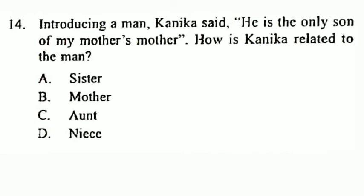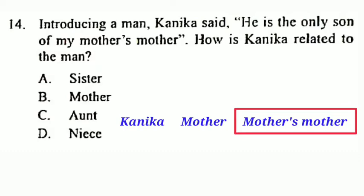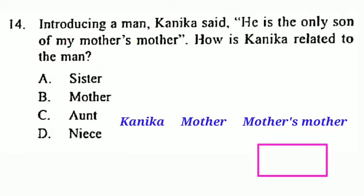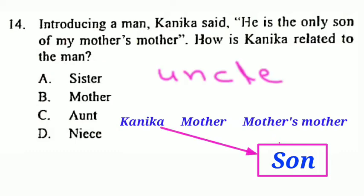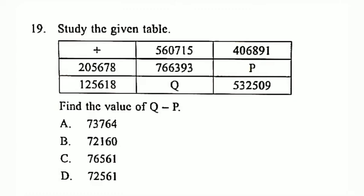Question number 14: Introducing a man, Kanika said, 'He is the only son of my mother's mother.' How is Kanika related to the man? Kanika's mother's mother is Kanika's grandmother. The man is Kanika's grandmother's son, which means he is Kanika's uncle. Therefore, Kanika is the man's niece. The question asks how Kanika is related to the man, and the answer is niece. Option D is correct. Question number 19: Study the given table and find the value of Q minus P.